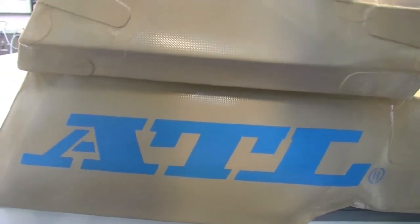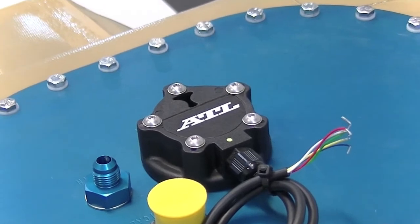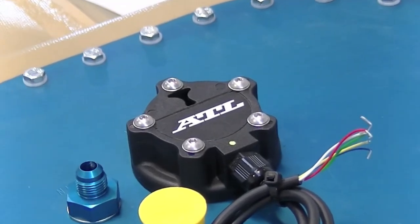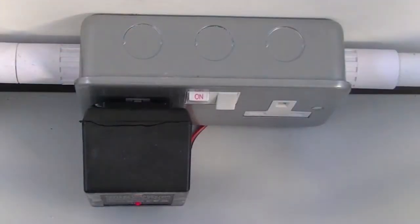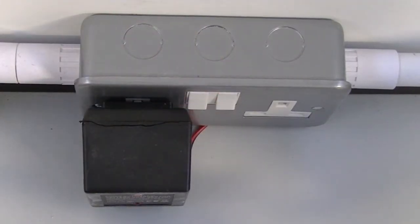This instructional video relates to the calibration of ATL resistance output level sender ELAD151. First ensure that power to the sender is off or disconnected. In this case we can turn off our transformer.